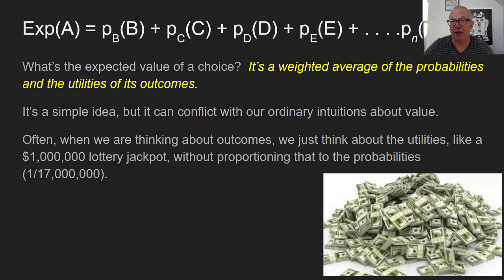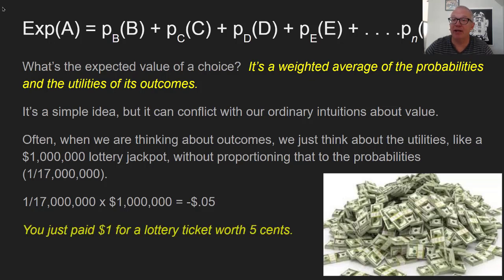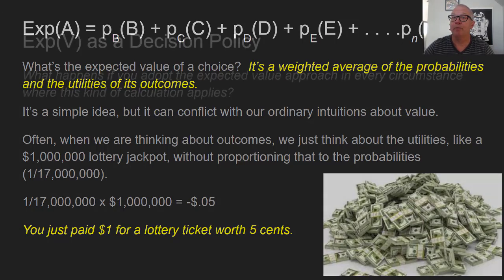You might be thinking about that pile of money, but the chance of getting it is only 1 in 17 million, which means the expected value of that lottery ticket is minus 5 cents. So you just paid a dollar for a lottery ticket that's actually worth 5 cents. The expected value sometimes gives us very different recommendations from what we normally do.